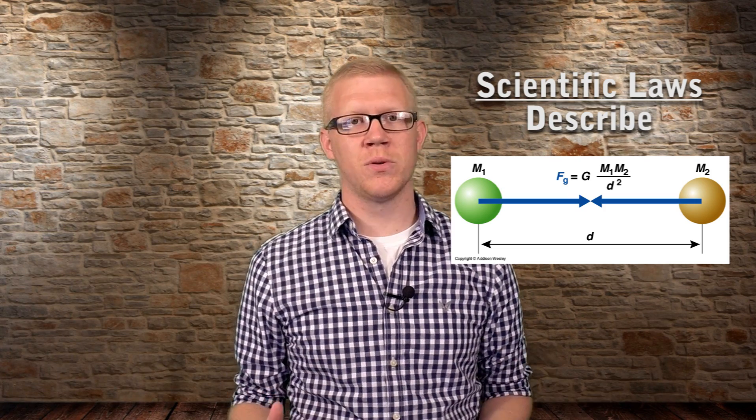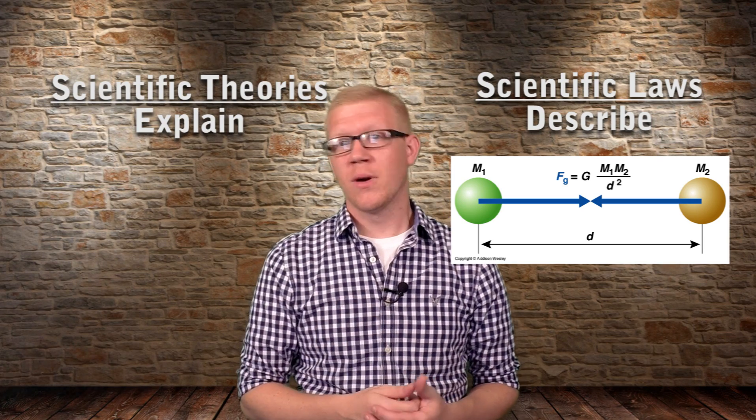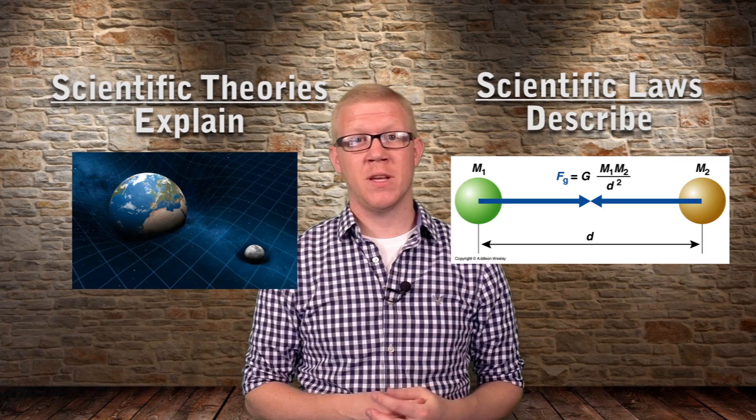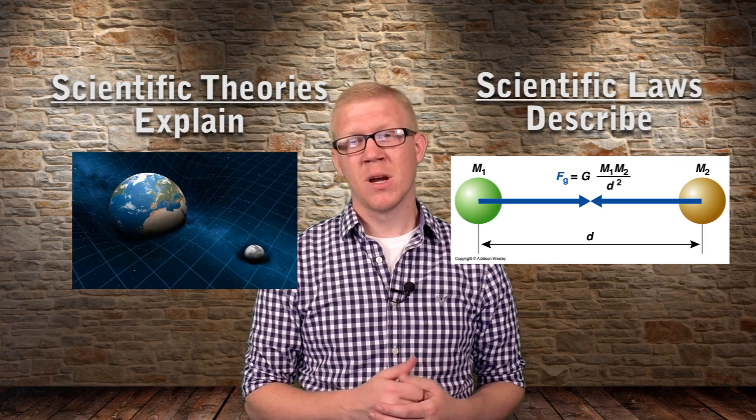A scientific theory, on the other hand, is one of the greatest achievements in science. They attempt to explain how things in nature occur. For example, Einstein's theory of general relativity attempts to explain gravity by using curvatures in spacetime caused by objects of mass.